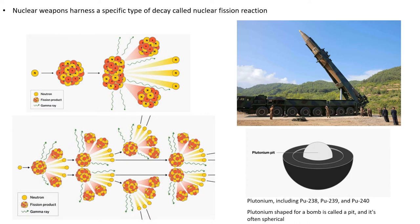Nuclear reactors control this process with a number of safeguards. Nuclear weapons, however, exploit the possible runaway effect of criticality to explosive ends. During the fission reaction, the nucleus of the heavy atom absorbs a flying neutron with the right speed or energy — this destabilizes the heavy nucleus and splits it into pieces.